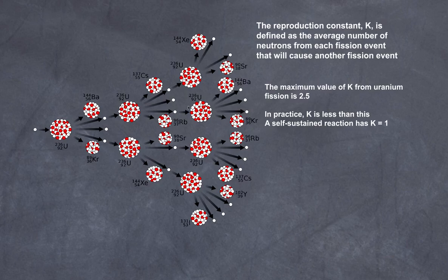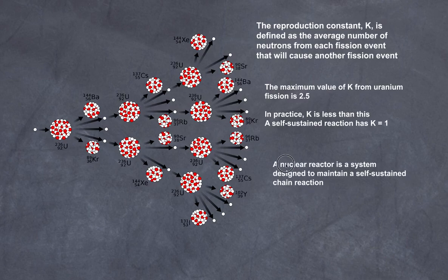So how do we do that? What if we had some system to absorb some neutrons? Well then we would actually be able to lower this reproduction constant. Ultimately a nuclear reactor is a system designed to maintain a self-sustained reaction. So let's have a quick look at the chain reaction by using this great little animation by the University of Colorado's PhET team.